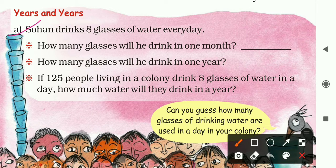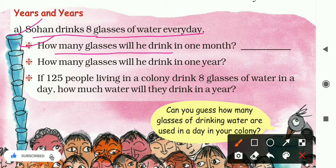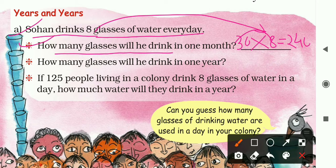Question A: Sohan drinks 8 glasses of water every day, meaning in one day Sohan is drinking 8 glasses of water. First question: how many glasses will he drink in one month? One month has 30 days, so 30 multiplied by 8. That gives us 8 threes are 24, with a zero, so 240 glasses of water he can drink in one month.